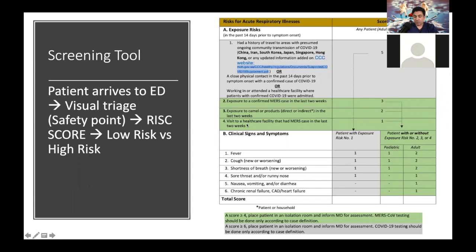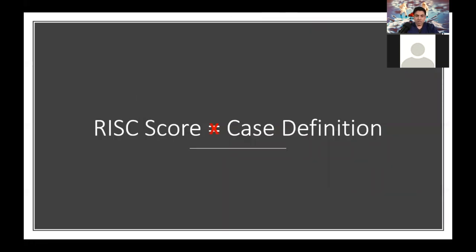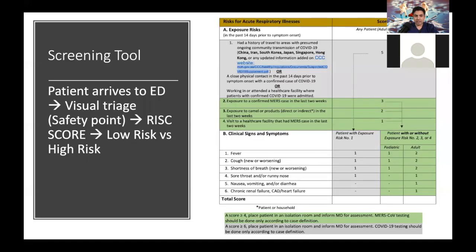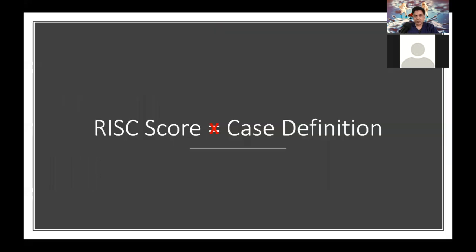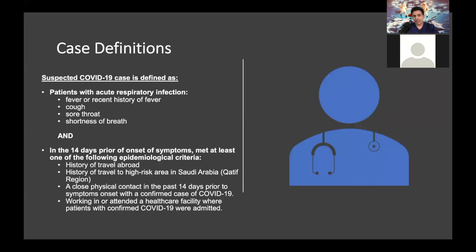We also have to continue thinking about MERS, because we still have cases every now and then, so we screen for that as well. Importantly, the risk score does not equate to case definition — the risk score is just an initial screening tool. If the patient scores on that, we apply the case definition to see if this patient is a suspected COVID-19 case or not.